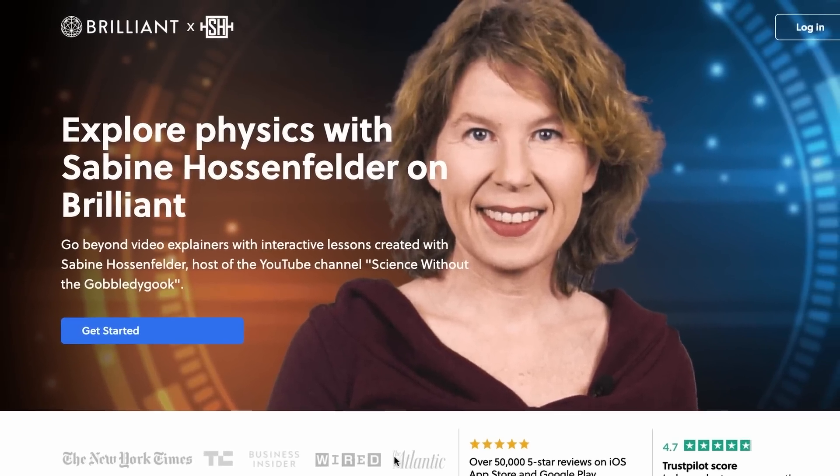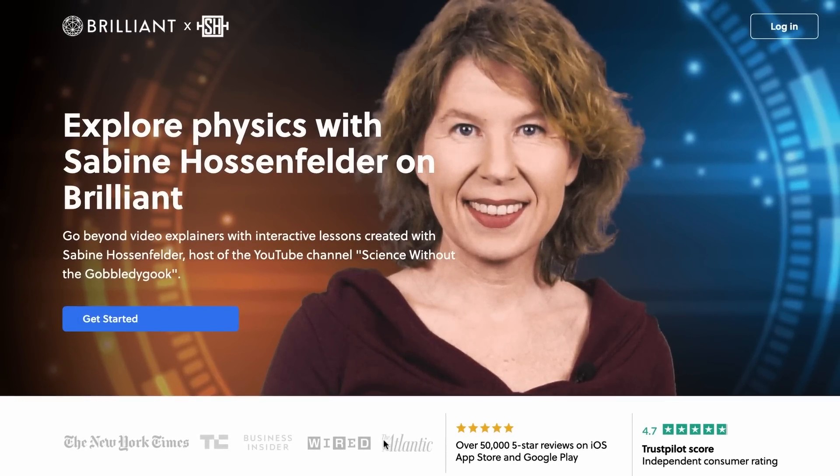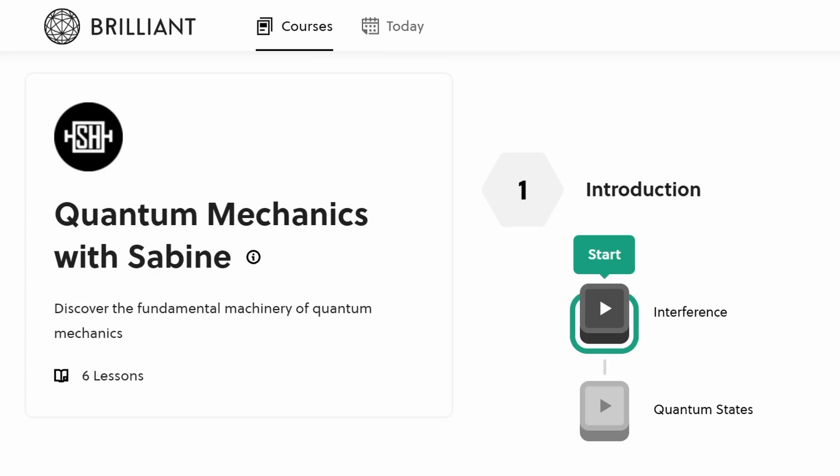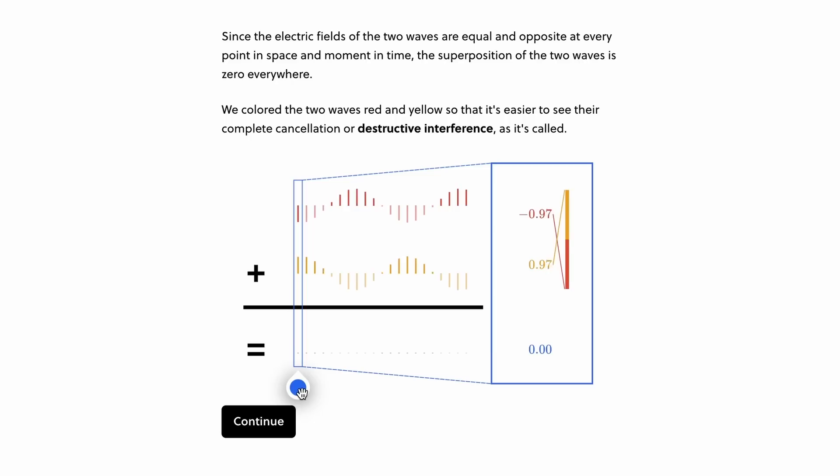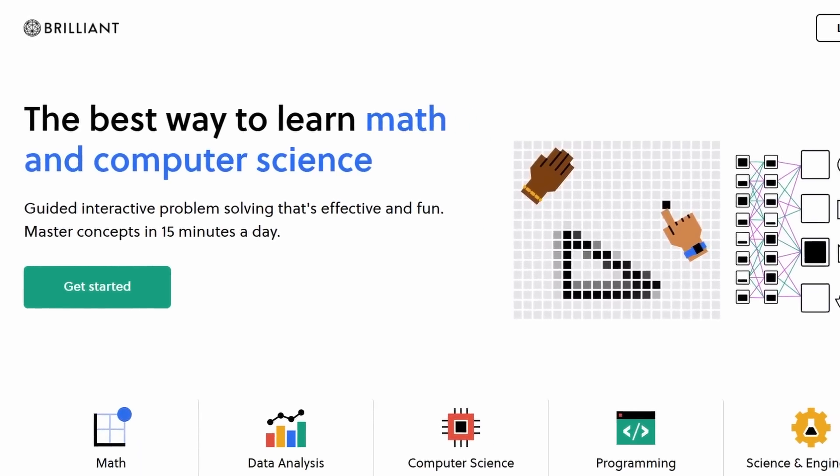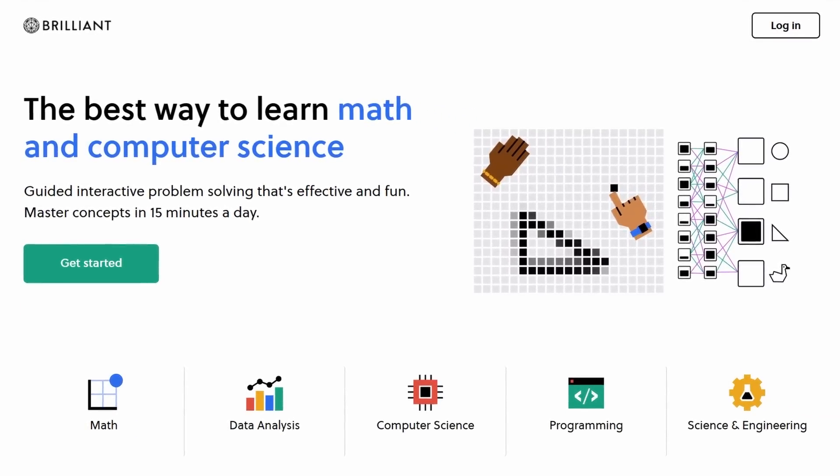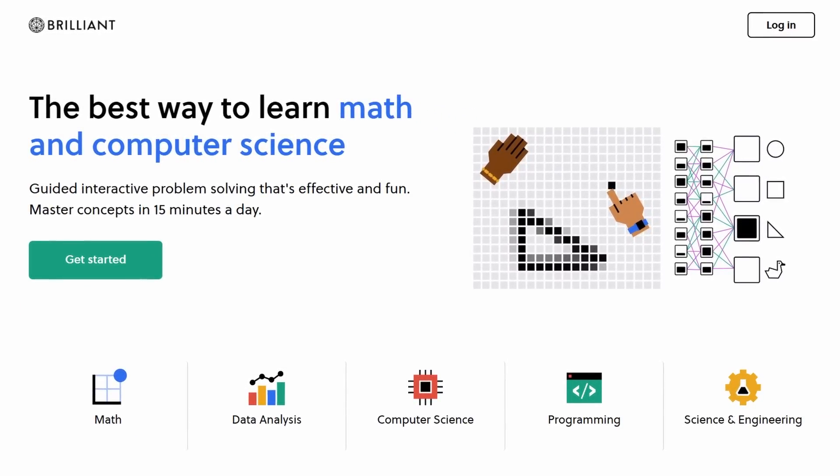Did you know I have a quantum mechanics course on Brilliant.org? It's a beginner's course that you can take without any background knowledge. It'll introduce you to topics such as interference, superpositions and entanglement, the uncertainty principle, and Bell's theorem. And afterwards, you can continue learning more about your favorite topics in science, computer science, or maths.